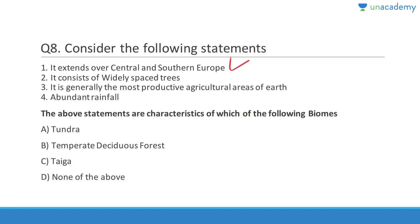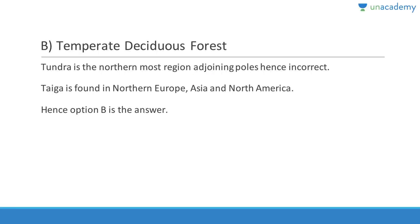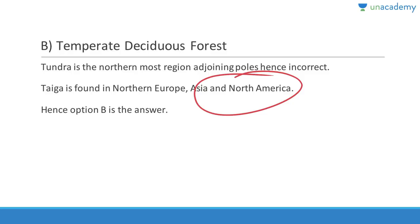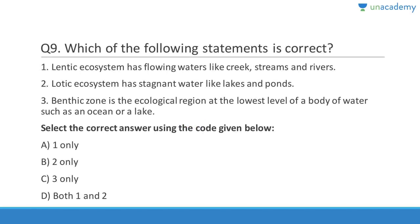Question 8: It extends over central and southern Europe, consists of widely spaced trees, and is generally the most productive agricultural area. With abundant rainfall, it cannot be tundra or taiga. The answer is B, temperate deciduous forests. Tundra is the northernmost region adjoining poles, and taiga is found in northern Europe, Asia, and North America — option B fits all the criteria.